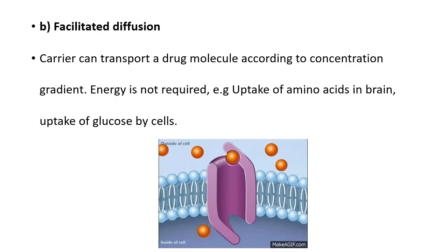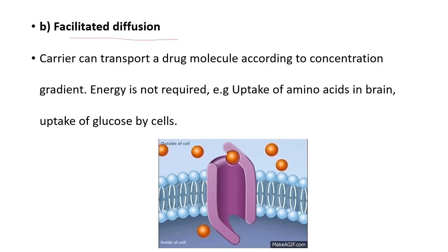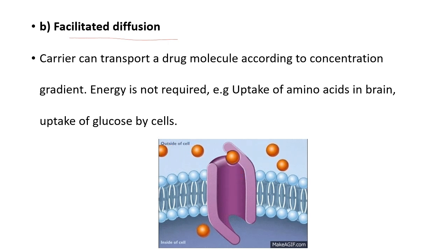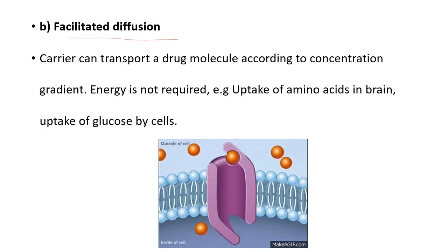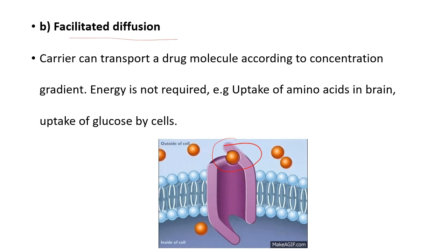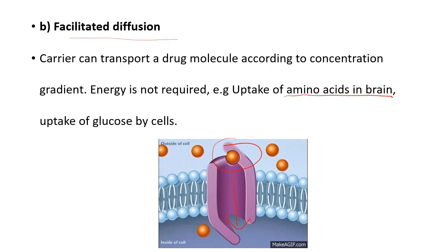The second type of carrier-mediated transport is facilitated diffusion. Here a carrier transports a drug molecule according to the concentration gradient — from higher to lower concentration — so energy is not required. The drug attaches to a carrier in the membrane which facilitates its diffusion across the membrane. Examples include uptake of amino acids in the brain and uptake of glucose by cells.